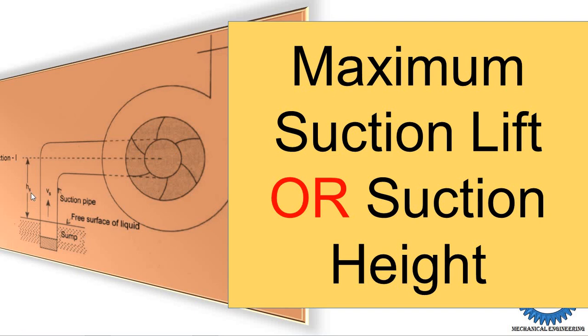The maximum suction lift refers to the maximum height of the suction pipe. Suppose we are installing a pump and thinking of putting the suction pipe one kilometer long to draw water from one kilometer depth — there are certain equations to find out the maximum length of the suction pipe.